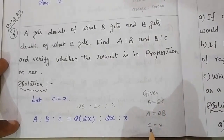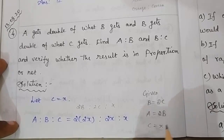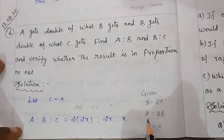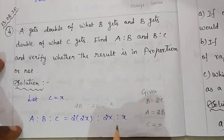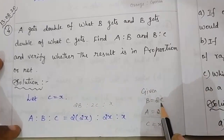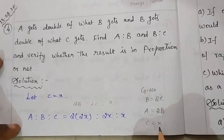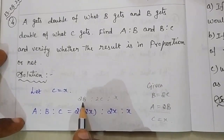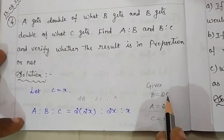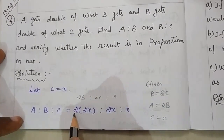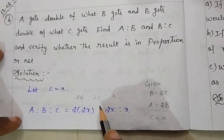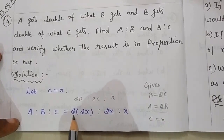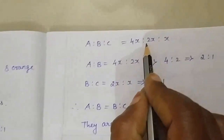The C value is not given, so let us consider C equal to X. The given ratio A is to B is to C: A value is 2B, B value is 2C, and C value is X. Substituting, B = 2C = 2X, and A = 2B = 2 into 2X = 4X. So A is 4X, B is 2X, and C is X.